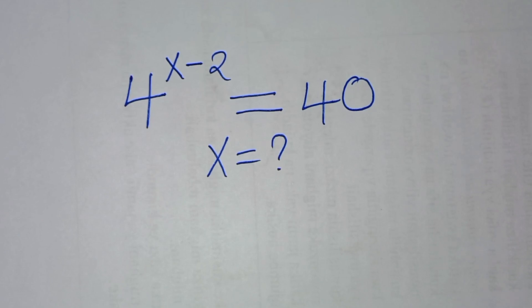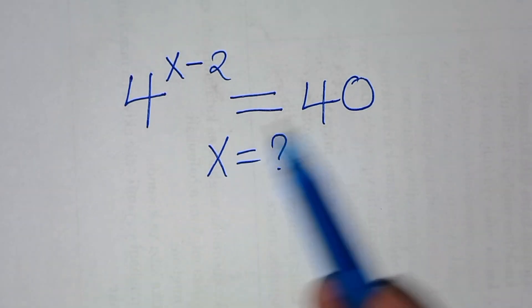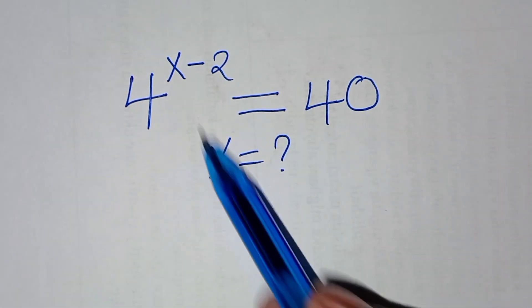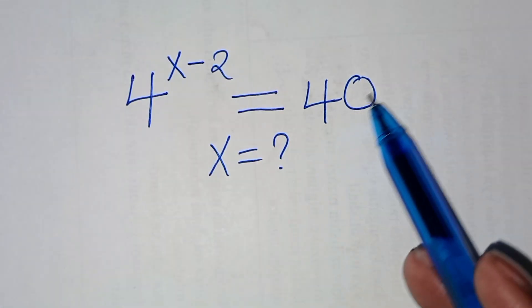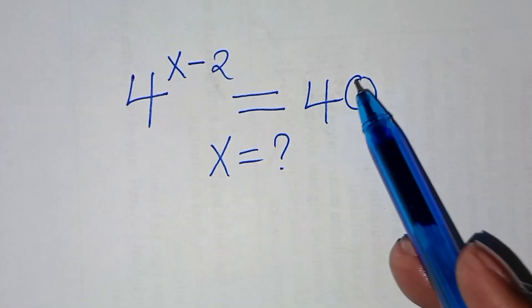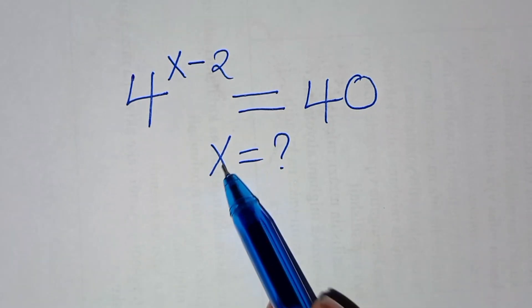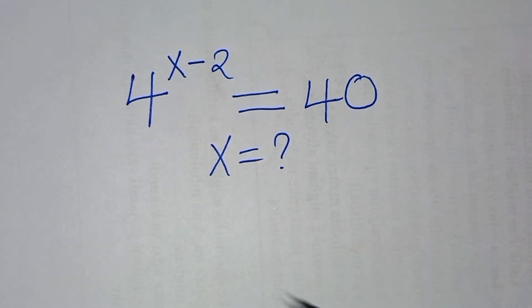Hello everyone, you are welcome to solve this nice exponential problem which is 4 to the power x minus 2. This is equal to 40. So what is the value of x?